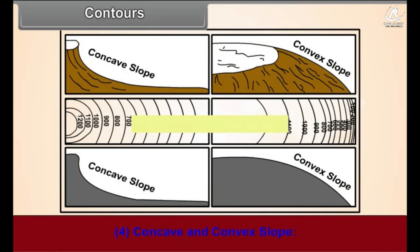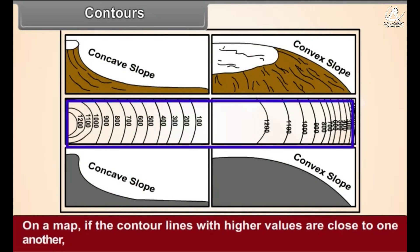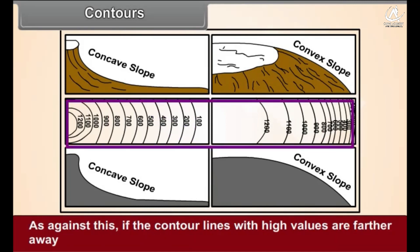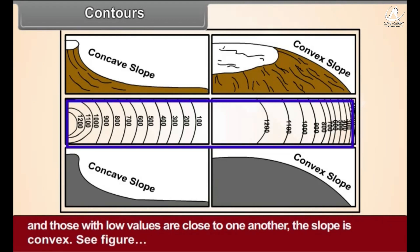Number four: Concave and convex slope. On a map, if the contour lines with higher values are close to one another and those with low values move far away from one another, it indicates a concave slope. As against this, if the contour lines with higher values are farther away and those with low values are close to one another, the slope is convex.